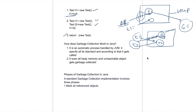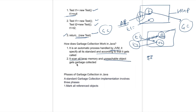Third scenario: you are creating anonymous objects where you are not keeping a reference to that object — you are just returning that object for a temporary purpose. Such objects are also eligible for garbage collection. So how does garbage collection work? It is an automatic process handled by the JVM. It has its own standards and according to those all the objects get garbage collected. It can scan all the heap memory and unreachable objects get garbage collected.